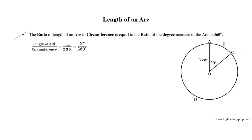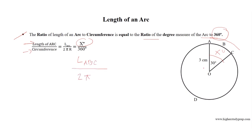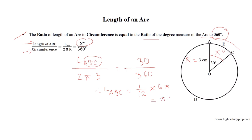Length of an arc. The ratio of the length of an arc to the circumference equals the ratio of the degree measure of the arc to 360 degrees. For this circle, the degree measure of arc ABC equals 30 degrees. So, length of arc ABC divided by the circumference 2 pi R, where R equals 3 cm, equals 30 over 360. This results in the length of arc ABC equals 1 divided by 12 multiplied by 6 pi, which equals pi over 2 cm.